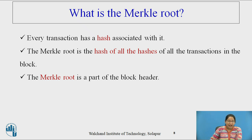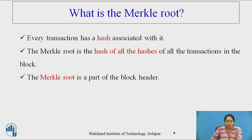A leaf node is a hash of a block of data, and each non-leaf node is a hash of its child node. The benefit of using a Merkle tree in a blockchain is that instead of downloading every transaction and every block, a light client can only download the chain of block headers. Also, if someone needs to verify the existence of a specific transaction in a block, they do not need to download the entire block — downloading a set of branches of the tree is enough.